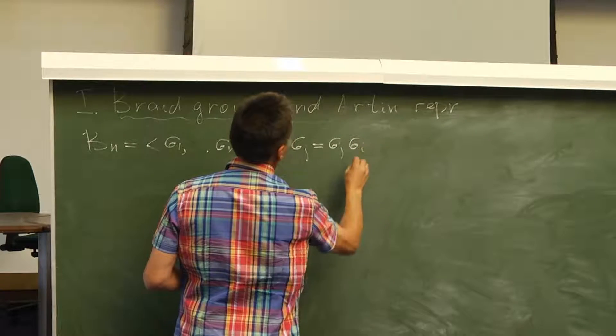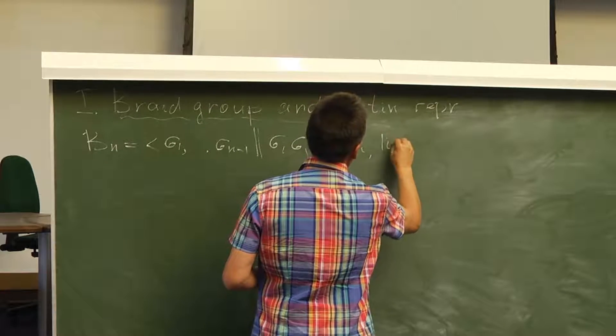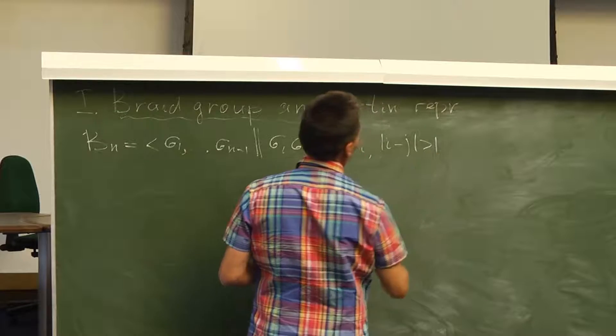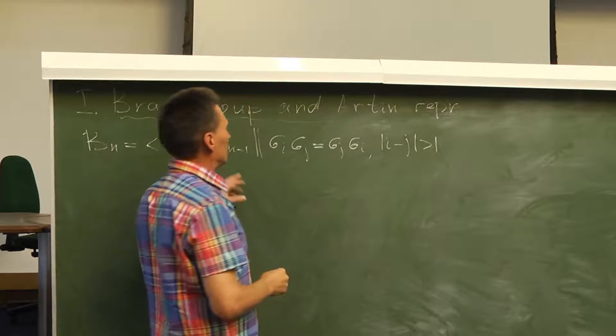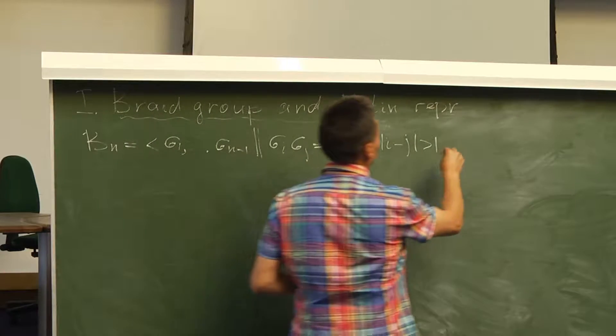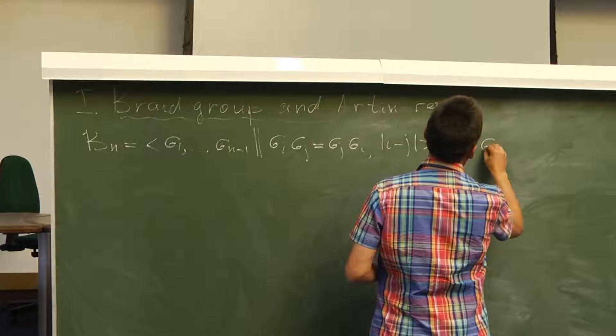The first relation is commutativity, and the second relation is the so-called long relation — a relation of this type.